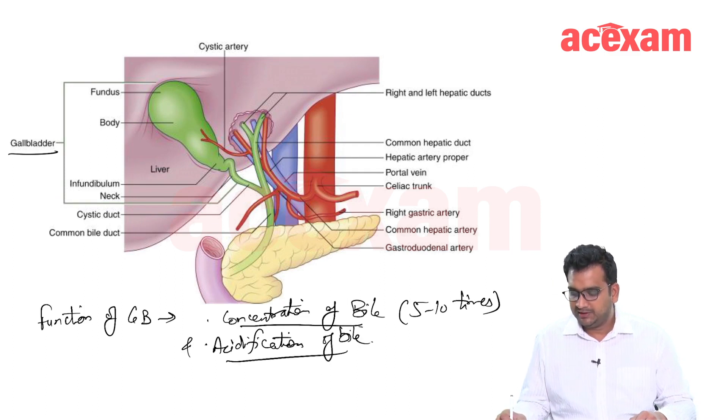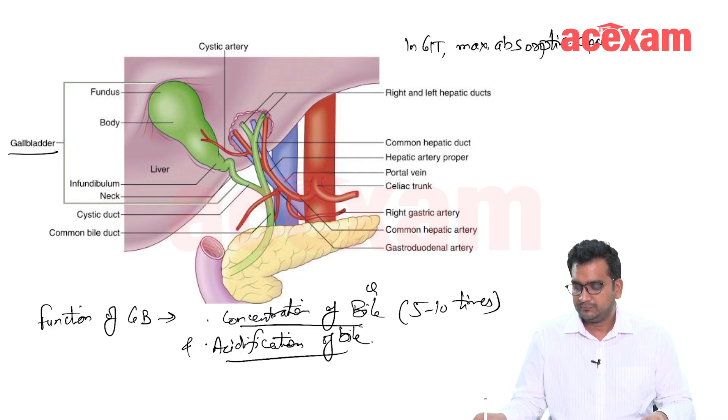Now, if the gallbladder is concentrating the bile, then it is having absorptive capacity. So overall maximum absorptive capacity is present in jejunum. In the GIT, maximum absorptive capacity is present in jejunum.